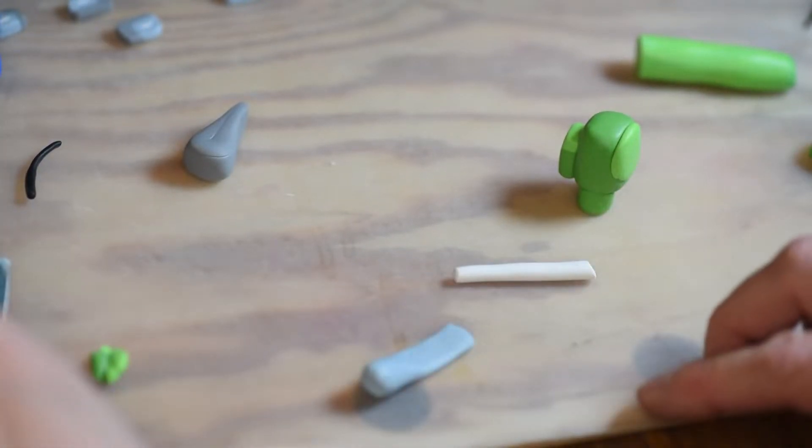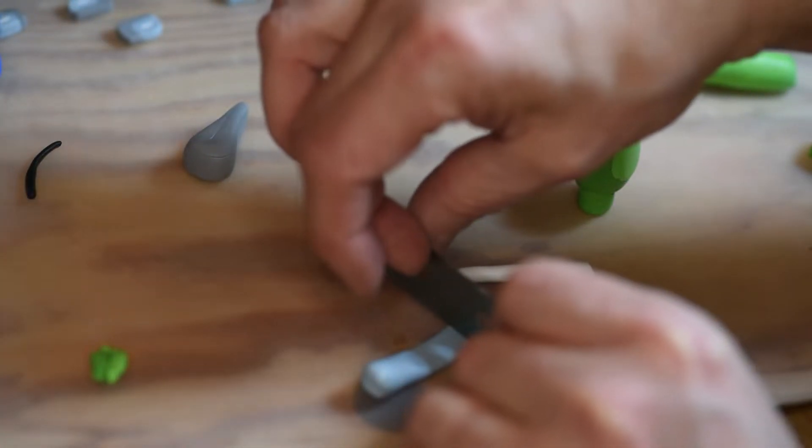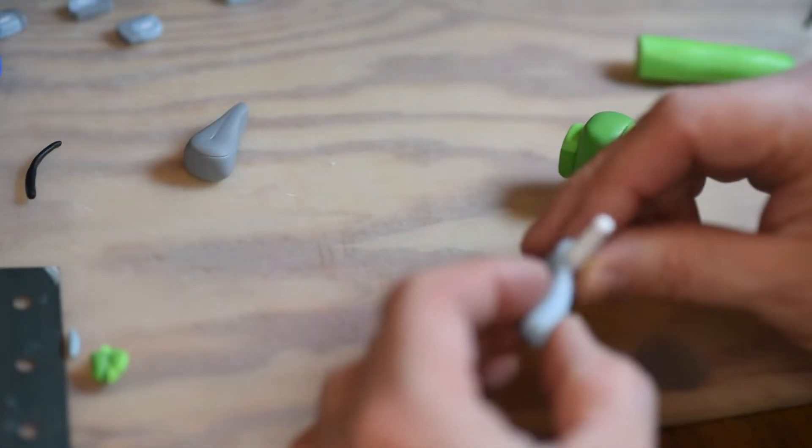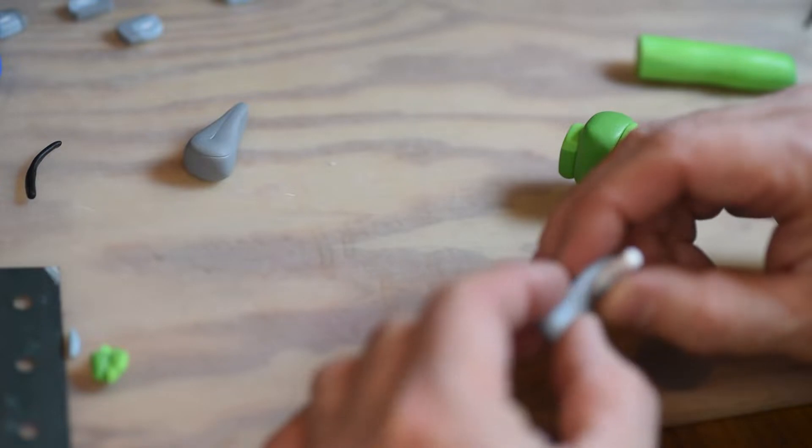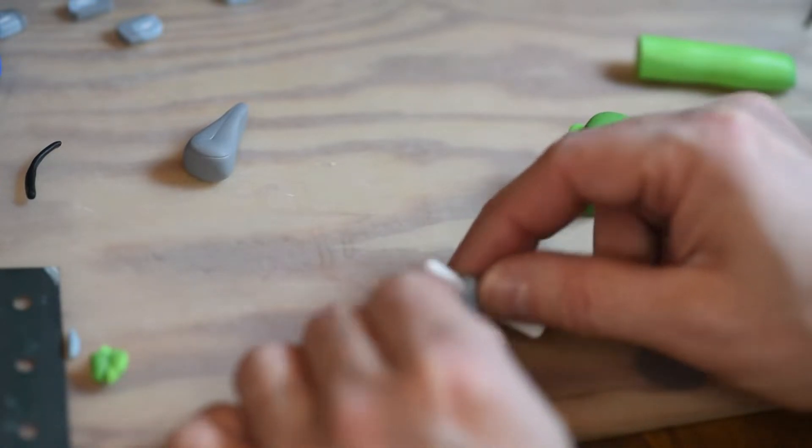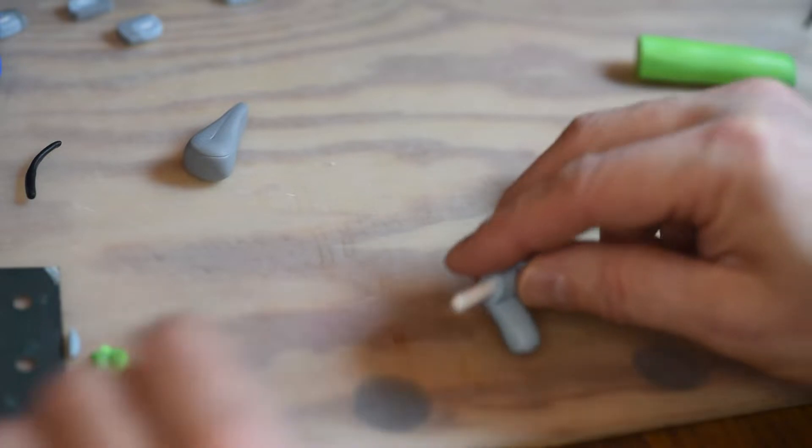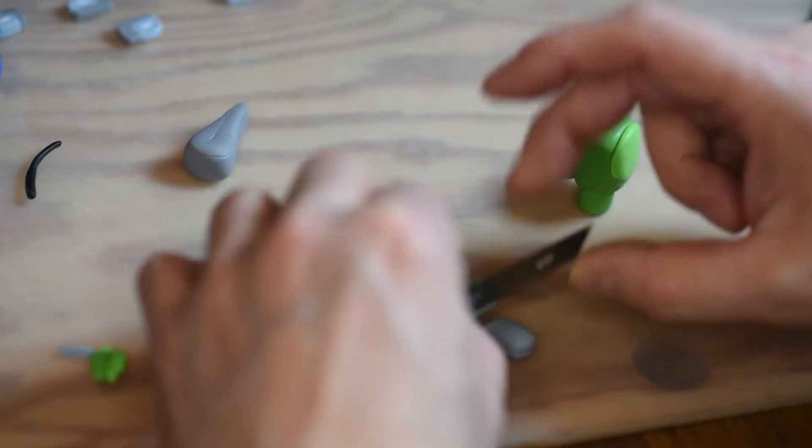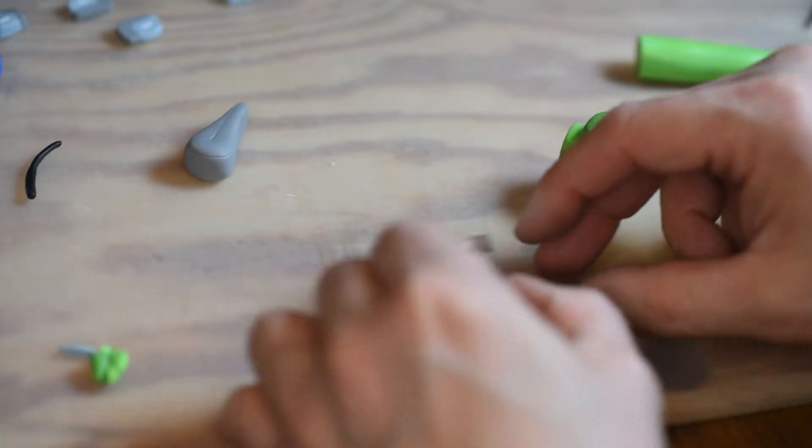Now for the little bit harder part. You need a roll of white, a little bit of light blue, and grey. Put the roll of white in the middle and cover it with the light blue. Cut away the rest.